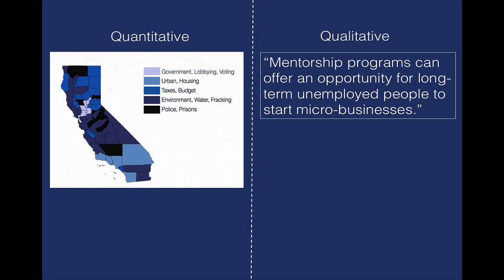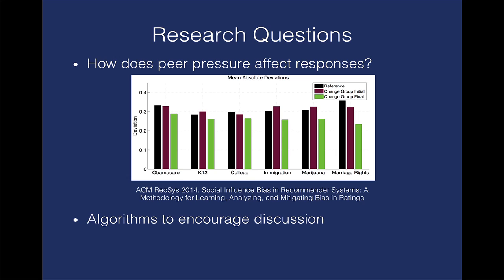This is a particularly interesting idea I wanted to highlight. When we make a big claim about something like using machine learning to improve democracy, we really have to understand how our system works from an end-to-end perspective. One of the problems we've been looking at is the question of bias and how we can mitigate these biases. We have a new paper at ACM Recsys that shows that peer pressure does affect systems like this, and we can use Bayesian regression techniques to mitigate some of these influences.